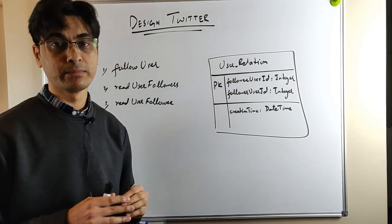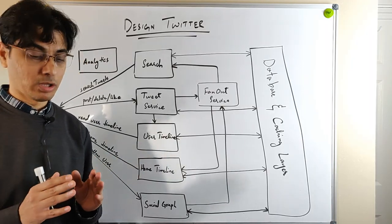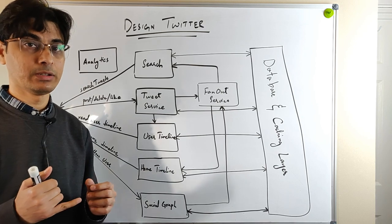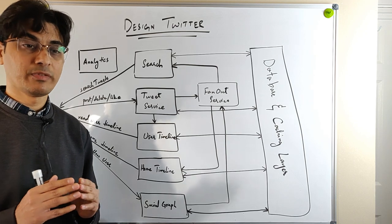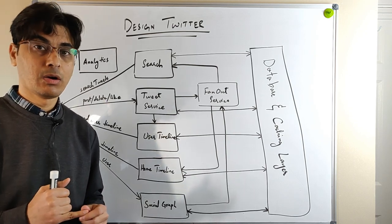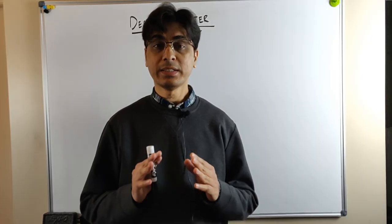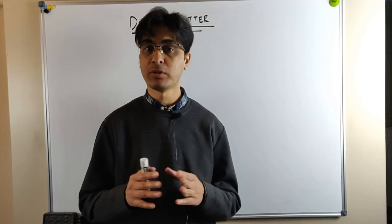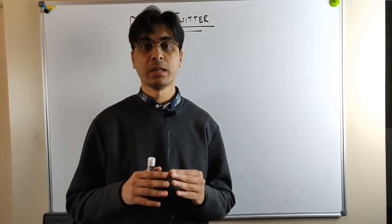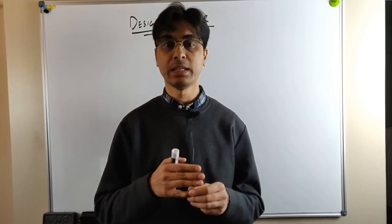The database schema for the social graph service comprises one table: the user relation table. The primary key is a composite of the following user ID and follower user ID, plus a creation time recording when the follow happened. In order to scale this service, we also need to shard this table — please let me know in the comments what approaches you would use.